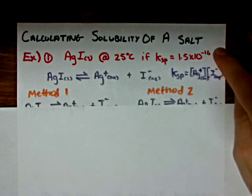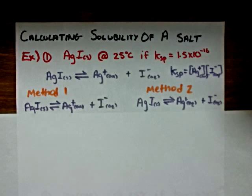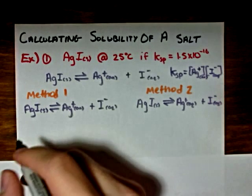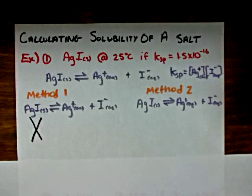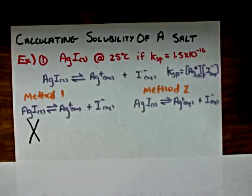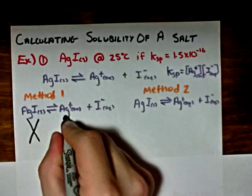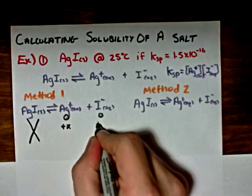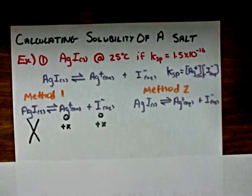In the first method, I'll solve this problem using an ICE table. When we set up the ICE table, the silver iodide solid is not going to be significant. When we place the silver iodide solid in water initially, we're going to have zero concentration of both of the aqueous ions. We'll have a change in concentration equal to plus X for each of the aqueous ions, and at equilibrium we'll have a concentration of X for both of the aqueous ions.